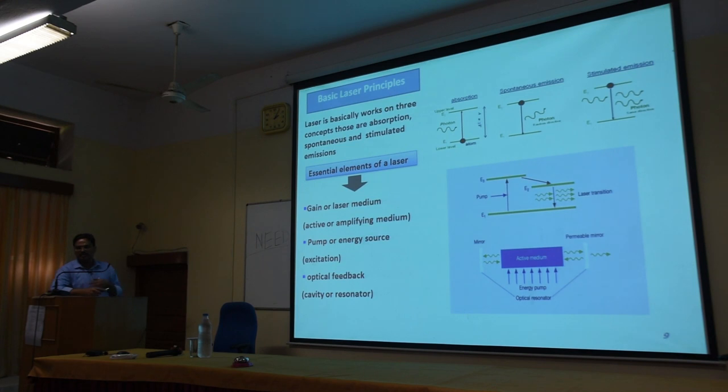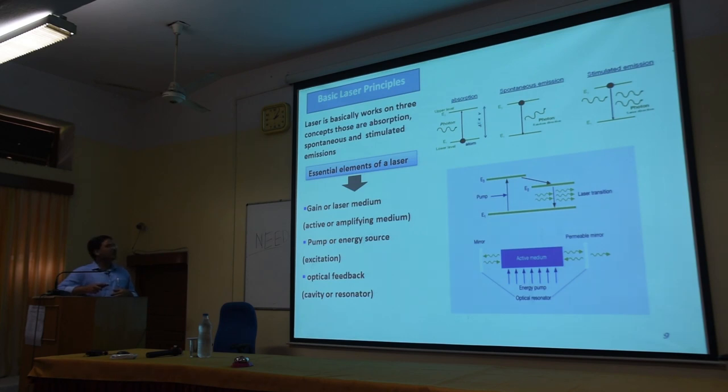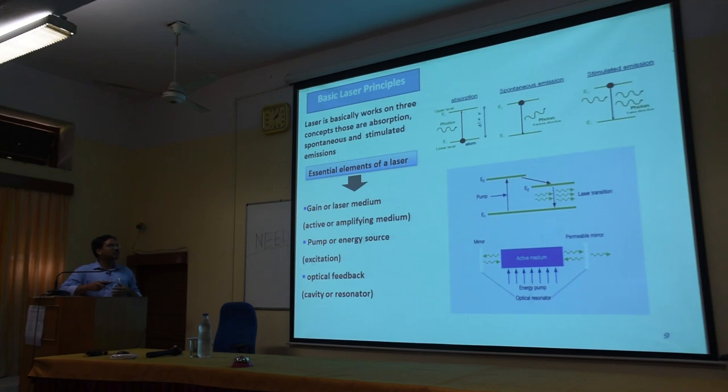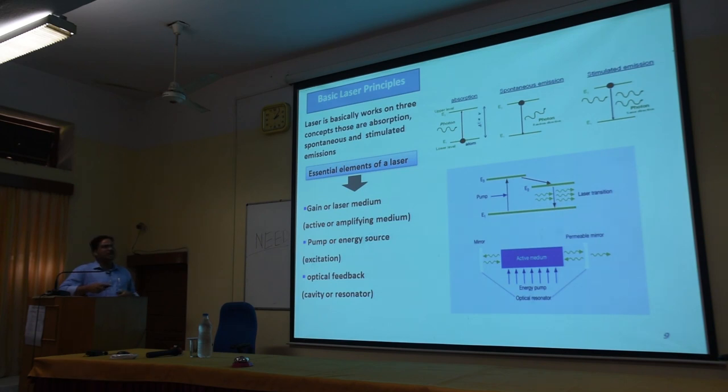The basic principles involved in laser technology involve three types of transitions. First is induced absorption — normally, atoms or ions or molecules in a material are in the ground state. When energy from an external source, optical or electrical, is provided to the system, atoms get excited and jump to a higher energy state. They then de-excite spontaneously and emit a random photon — this process is known as spontaneous emission. The third and very important process is stimulated emission, also known as triggered or induced emission.